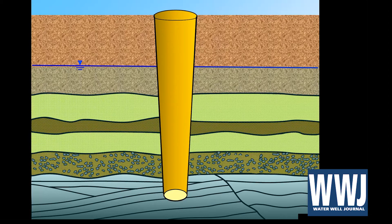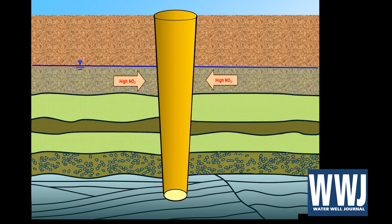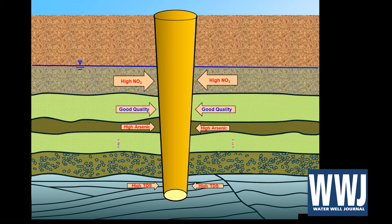Here's our well, and we know we have different strata that we may have penetrated. That strata may all provide the same gallons per minute and the same water quality, or more commonly it may be different, and we can have water quality that is poor in some depth intervals. Here I'm showing nitrate, arsenic, and total dissolved solids being high in certain depth intervals, and then the rest having pretty good water. That's not uncommon.